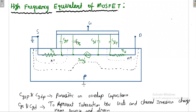There is a capacitance between gate and source, and another capacitance CGD between gate and drain. The current flowing from drain terminal to source terminal is GM × VGS dash. VGS dash is the voltage applied at the internal terminals of the gate and source. The outer terminal voltage is simply VGS, while the internal terminal voltage is VGS dash because of the resistance drop.